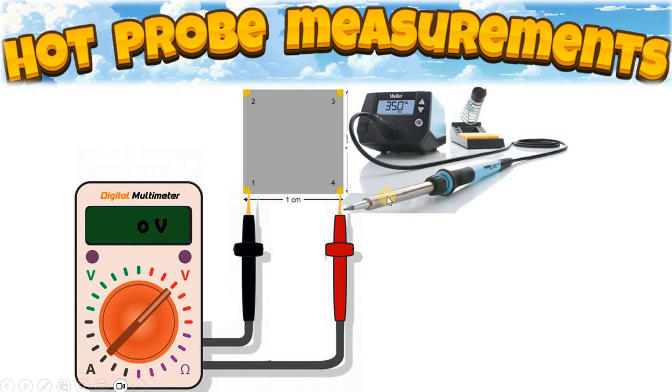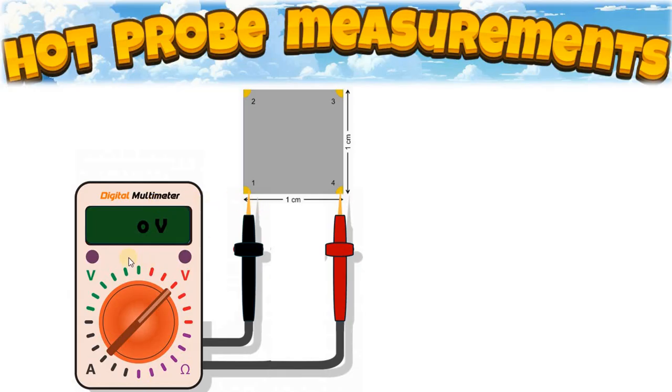We connect the hot probe, we connect the soldering iron to this positive probe of the multimeter. And in this process, the other side remains at room temperature. So initially before connecting the hot probe, you might observe that the voltage is going to be 0 volts.